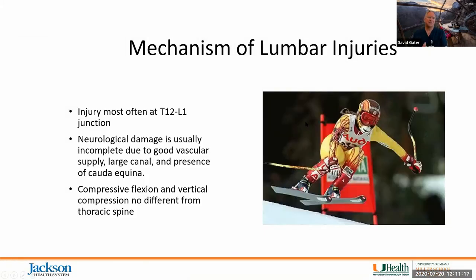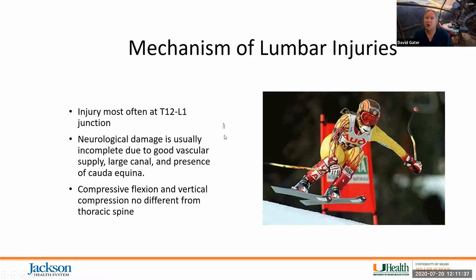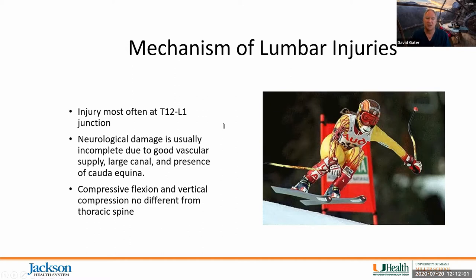Lumbar injuries most commonly occur at T12 through L1 because the rib cage ends right there, making the lumbar spine particularly vulnerable to transmitted forces. Generally, lumbar injuries are incomplete — partly because of a good vascular supply and a relatively large canal, and partly because the cord typically ends around L1 or L2. The remaining neural elements are cauda equina, so unless there is complete disruption, you'll generally see some ability to recover.